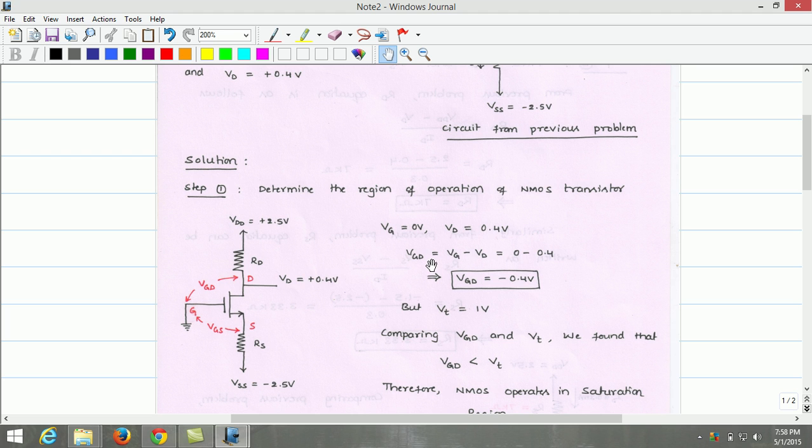Vgd needs to be estimated. Vgd equals Vg minus Vd, which is Vg is 0V since gate is grounded. The drain voltage is given as 0.4V, so Vgd is found to be minus 0.4V.